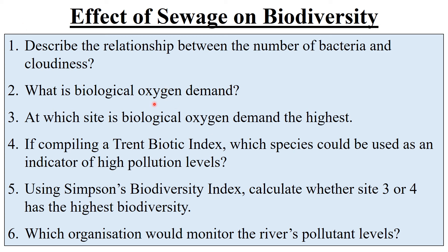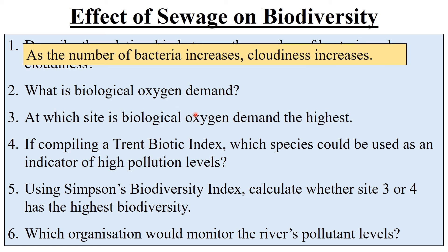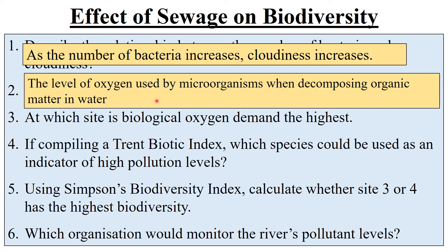Number one: describe the relationship between the number of bacteria and cloudiness. As the number of bacteria increases, the cloudiness increases — which would suggest that the bacteria are what's causing the cloudiness. What is biological oxygen demand? It's the level of oxygen used by microorganisms when decomposing organic matter in water. At which site is biological oxygen demand the highest? It's where you find the most bacteria and the lowest oxygen — and that would be site two.